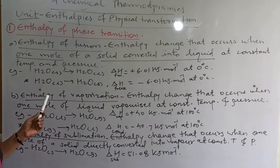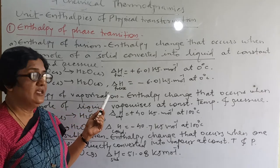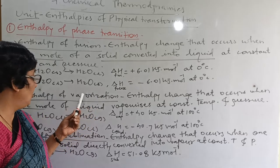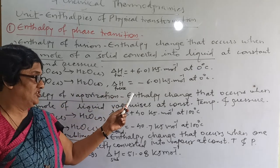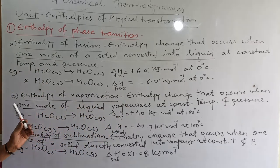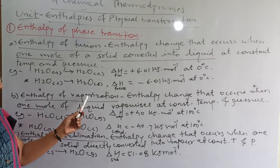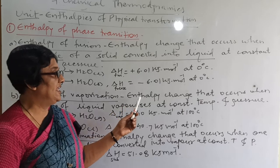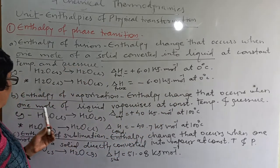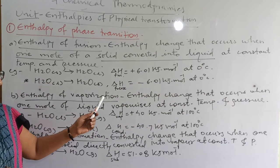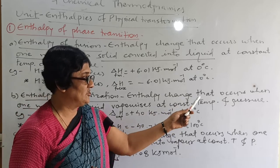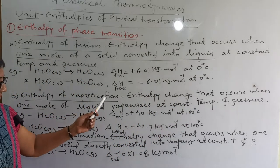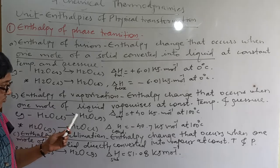The second definition is enthalpy of vaporization. Vaporization of one mole of a compound takes place and the enthalpy change is recorded at constant temperature and pressure. Vaporization is the conversion of liquid into gas. The enthalpy change that occurs when one mole of liquid vaporizes at constant temperature and pressure — this is the conversion of liquid to gas.